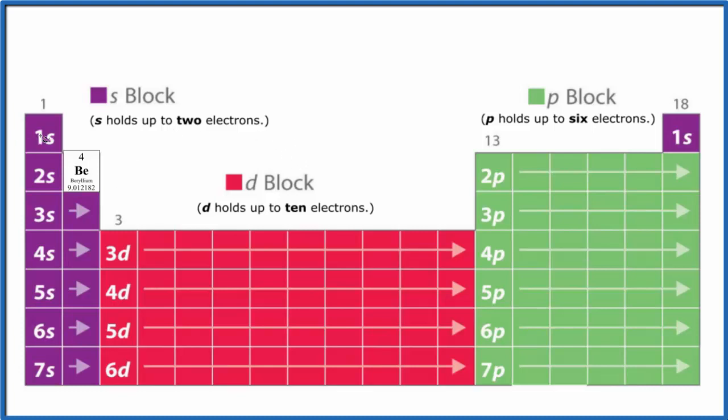We have the first energy level, 1s1 and 1s2, and that's full. So we'll come here to the 2s. We have 2s1 and then 2s2, that's beryllium, 2s2. So this is the electron configuration for beryllium.